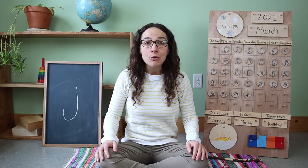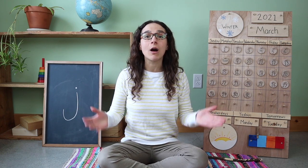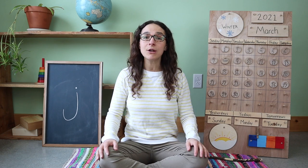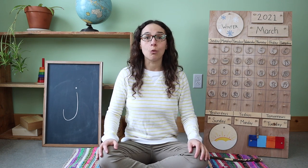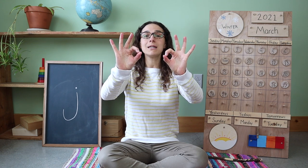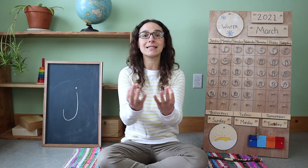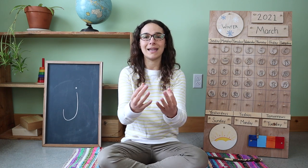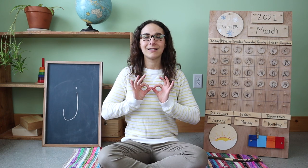Guess what, friends? I have a new addition to our circle times. After we complete the letter and number of the week, each day I'm going to teach you a new word in sign language. Sign language is a language that uses hand gestures and facial expressions to communicate instead of saying words out loud. This week I'm going to teach you how to say 'family' in sign language. Watch carefully — take both hands, use your counting fingers and thumbs, join them together to form a circle, bring those two circles close to your chest, and in an outward motion go like this until your pinky fingers touch. Family.